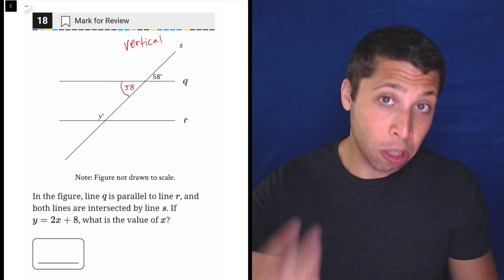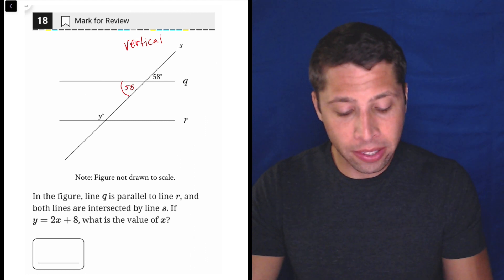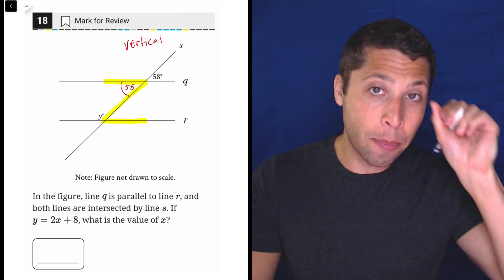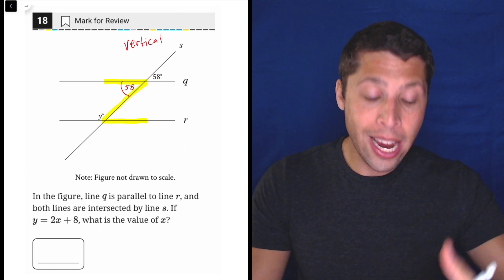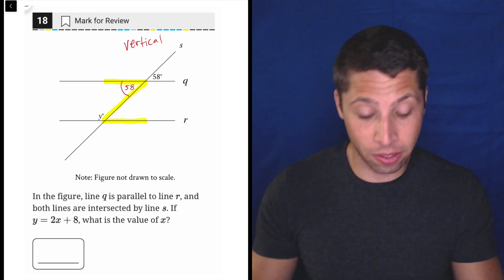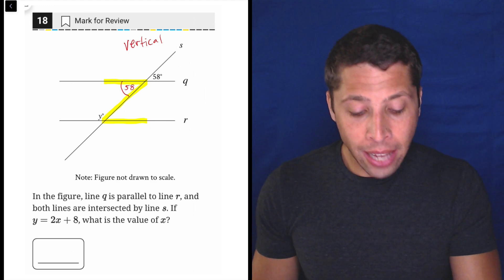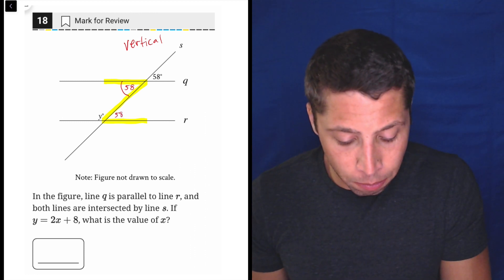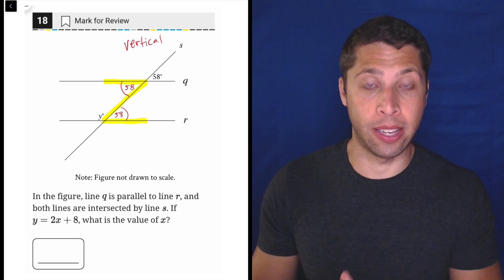Then we can use the parallel lines. And so basically we see there's a little bit of a Z shape here, right, Z. And the parallel lines create an equivalence at the two corners of the Z. So if that top corner is 58, then this bottom part of the Z is also 58. So we have to be able to recognize this.